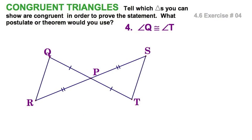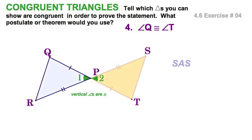Let's take this familiar diagram and make some triangles. First thing we've got right here is a pair of vertical angles, and that's going to lead to congruent triangles by side-angle-side. You can see it right there — side-angle-side: you've got a side, an angle, and a side.